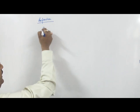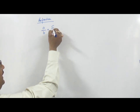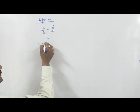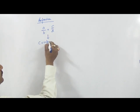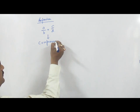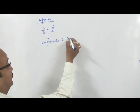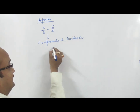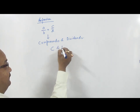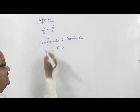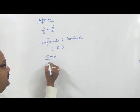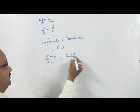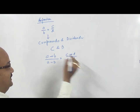If we have A by B is equal to C by D, then we can apply componendo and dividendo. In short, it is written as C and D. Its C and D form is: A plus B upon A minus B is equal to C plus D upon C minus D.